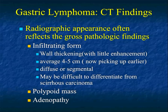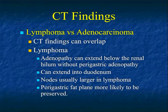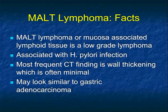We talk about lymphoma typically being more diffuse, with a greater amount of nodes — particularly nodes below the level of the renal hilum. However, we know that the findings do overlap. If you have an infiltrating tumor in the stomach that goes into the duodenum, it's more likely lymphoma. Larger nodes can be seen with lymphoma, but I showed you cases before with very large nodes in gastric cancer. Perigastric fat planes are more likely to be preserved, but that might help only if you have a bulky tumor.